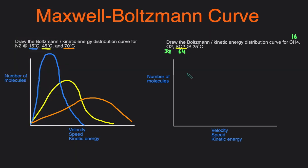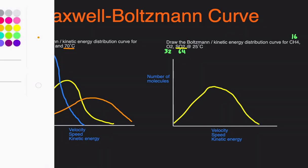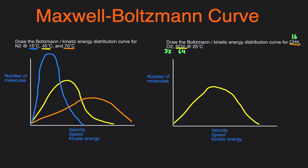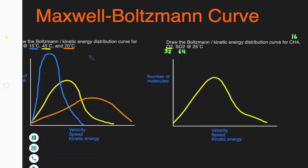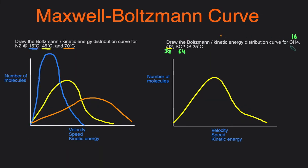We'll start with the middle one — O2 — and draw a curve. CH4 is lighter, so it's faster; it will be shifted to the right and also shorter to keep the area under the curve the same. SO2 is the heaviest, so it's the slowest; it'll be shifted to the left and therefore taller.